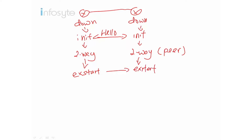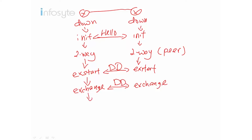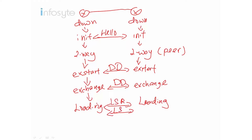From the two-way state, they go to the ExStart stage. Under the ExStart stage, they will send the Database Description packet. Then they go to the Exchange stage, which also sends the DD. After that, they go to the Loading stage, where they will send the LSR and LSU packets. Finally, they reach the Full stage, where they send the LSAck to each other.